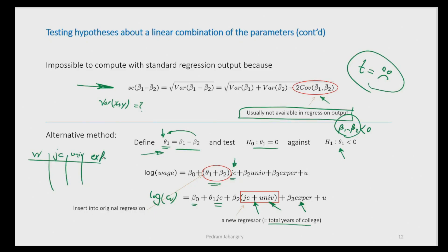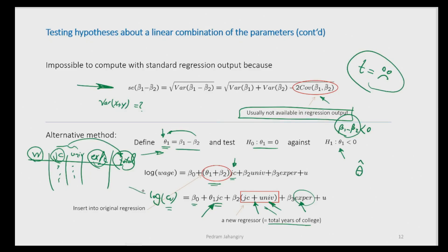All of these variables are observable in the dataset: wage, junior college years, university years, experience. We can construct the new column 'total' as junior college plus university. Then we regress log wage on junior college, total, and experience. The coefficient of interest is θ̂ — the coefficient on junior college in this new model. We then test whether θ̂ is significant. That's it — we're done.